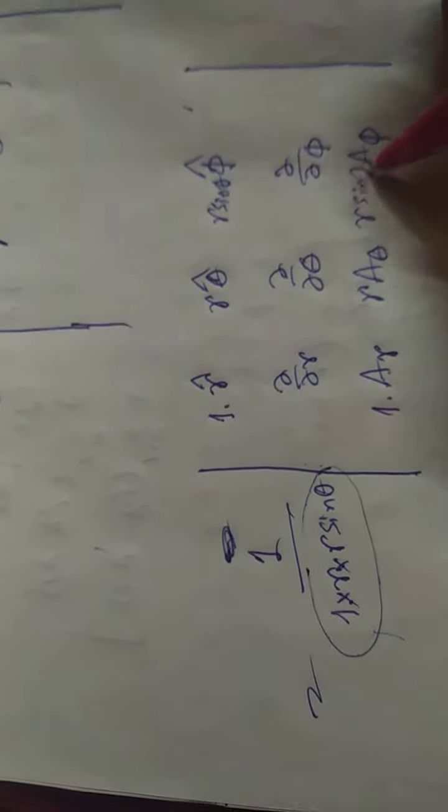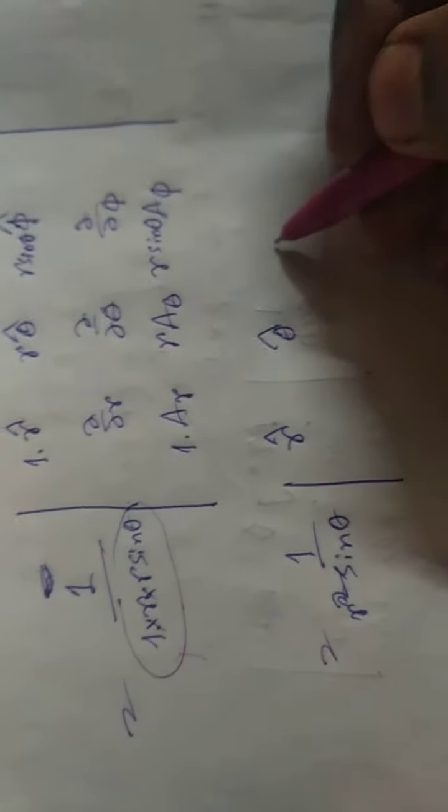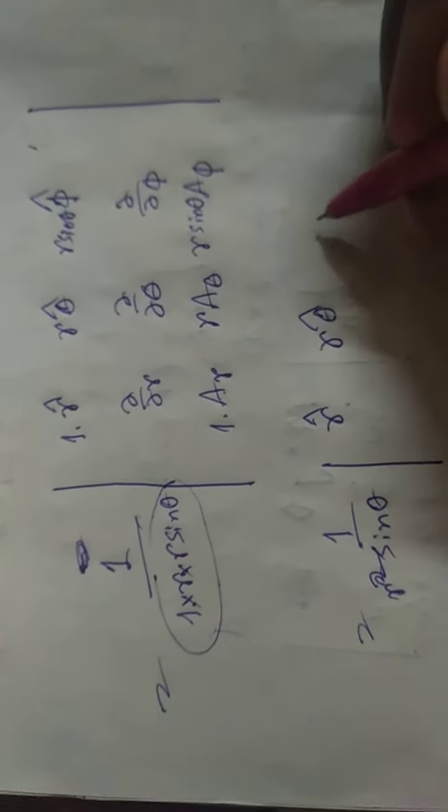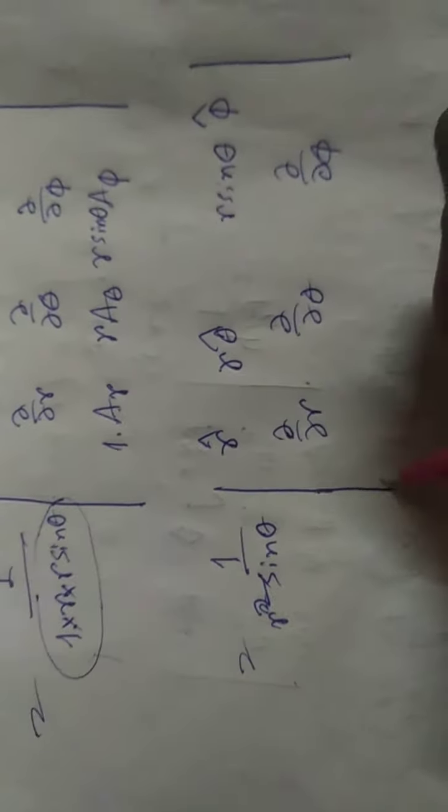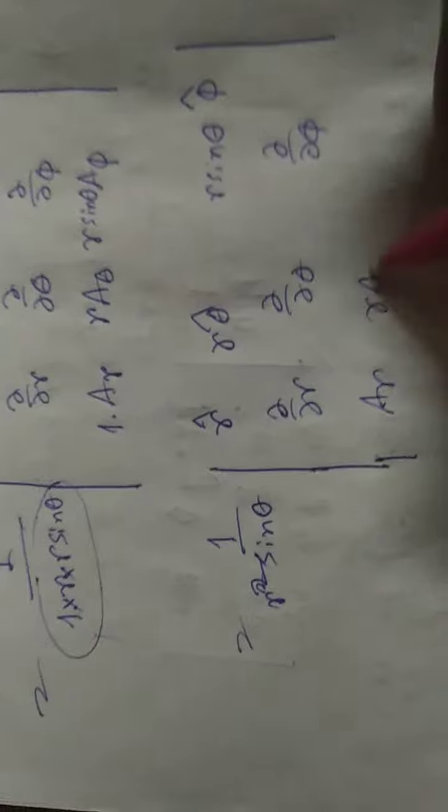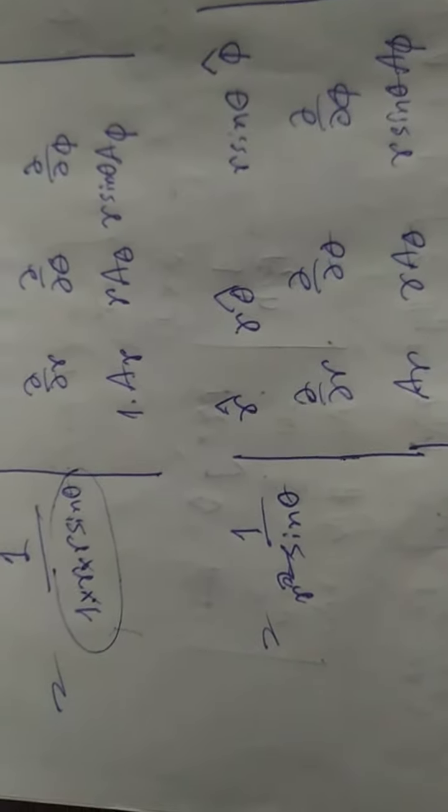Now what you will write: 1 by r square sine theta. Then r hat, theta hat, r sine theta phi hat. Del del r, del del theta, del del phi. And a r, r a theta, r sine theta a phi.